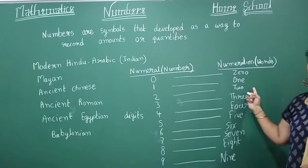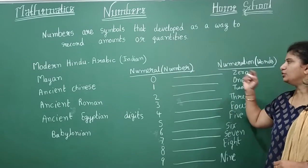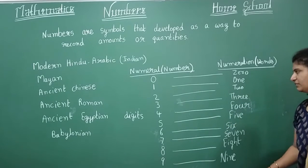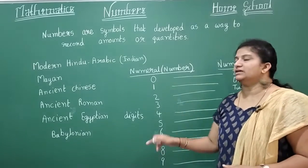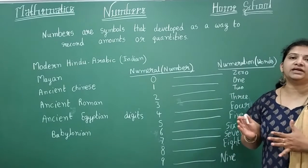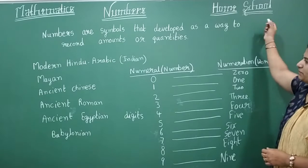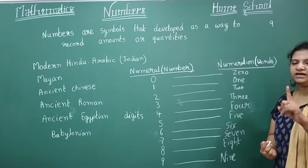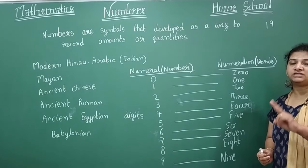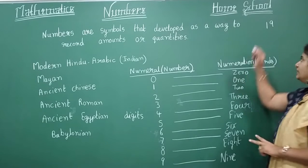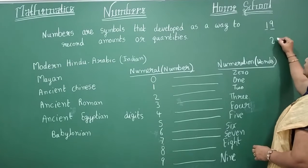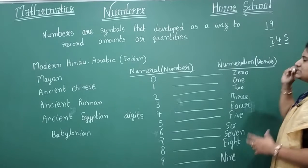When we represent in symbol form, that's a digit; when we write in words, that's numeration. By seeing the number we can say how many digits it has. For example, if I write 9, it is a single-digit number. If I write a two-symbol number, it is a two-digit number. Then 245 has three digits — we will learn more about that using place values in our next class.